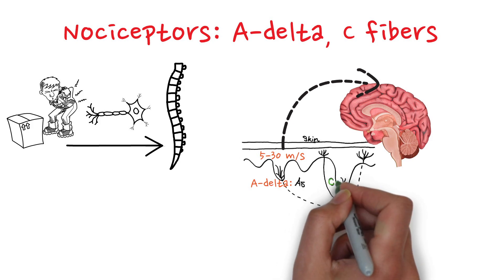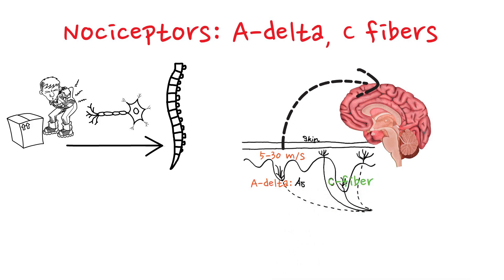In contrast, C fibers are thin, unmyelinated nerve fibers. Since they lack a myelin sheath, their conduction speed is much slower, around 0.5 to 2 meters per second.